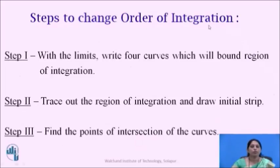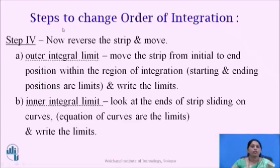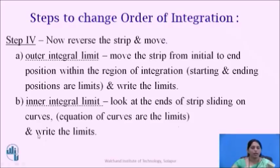Now we will see the steps to change the order of integration. Step 1: with the limits, write the four curves which will bound the region of integration. Step 2: trace out the region of integration and draw the initial strip. Step 3: find the points of intersection of the curves. Step 4: reverse the strip and move it, which will give us the limits of the integral. To obtain the outer integral limit, move the strip from initial to end position within the region of integration — the starting and ending positions are the limits. To obtain the inner integral limit, look at the ends of the strip sliding on the curves; the equations of the curves are the limits.